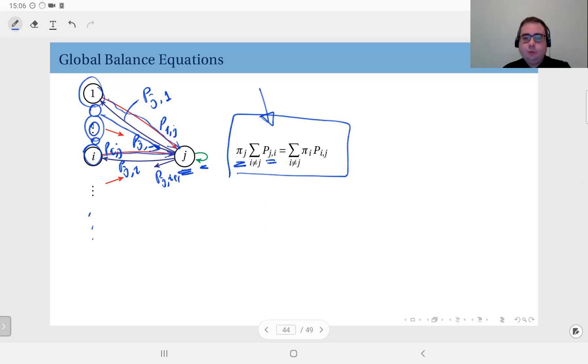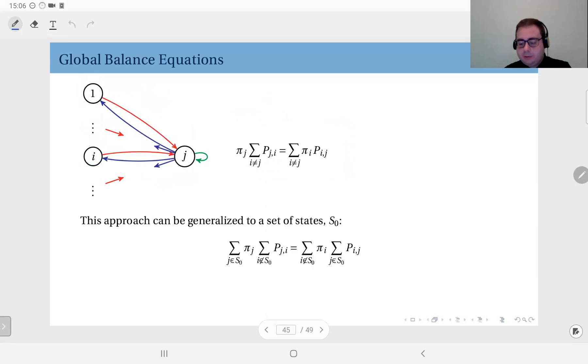These we call the global balance equations. In fact, you can generalize this to not only a single state j, but a set of states, let's say S₀.